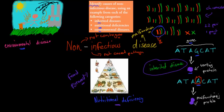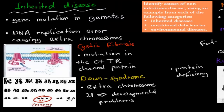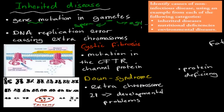Inherited diseases are caused by a gene mutation occurring in a gamete — either a sperm or an egg cell. A mutation in a gamete leads to a new allele, which can be harmful, neutral, or beneficial. It can also be caused by an error in DNA replication that results in an extra chromosome.